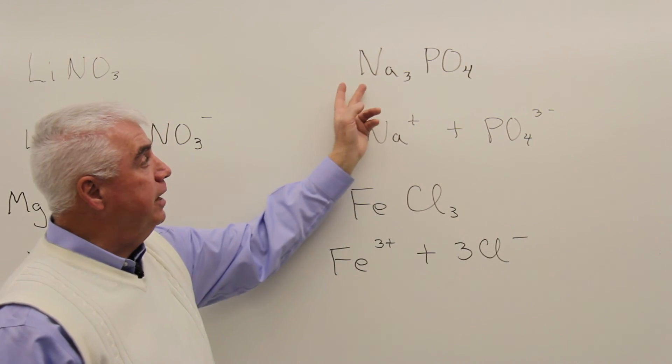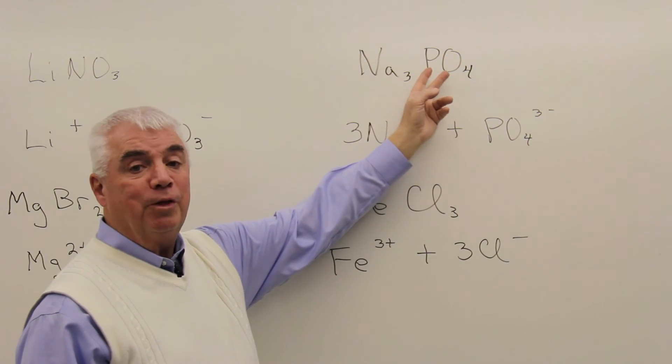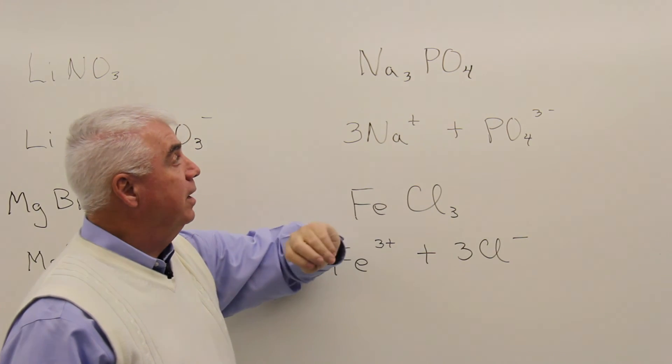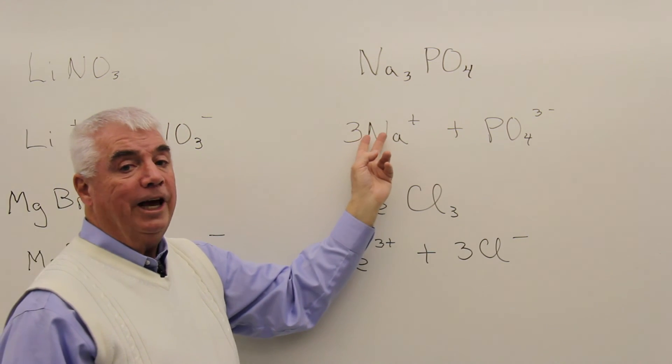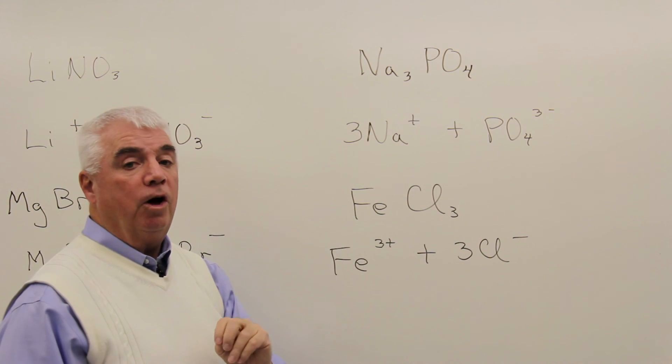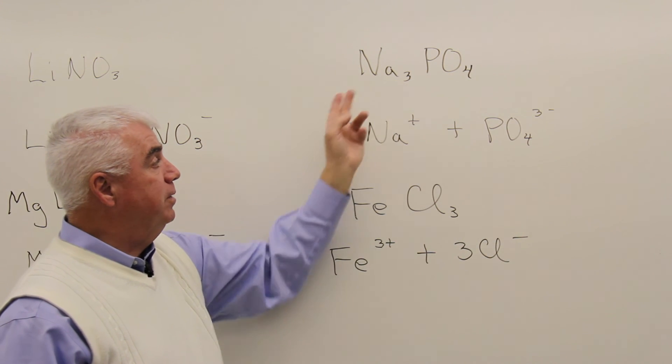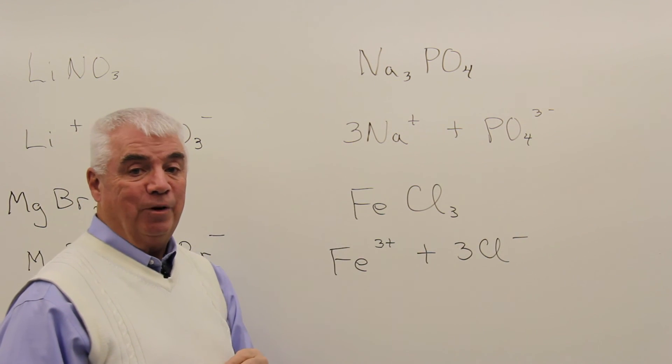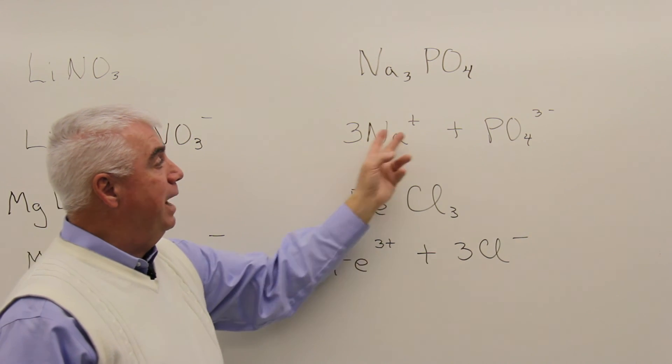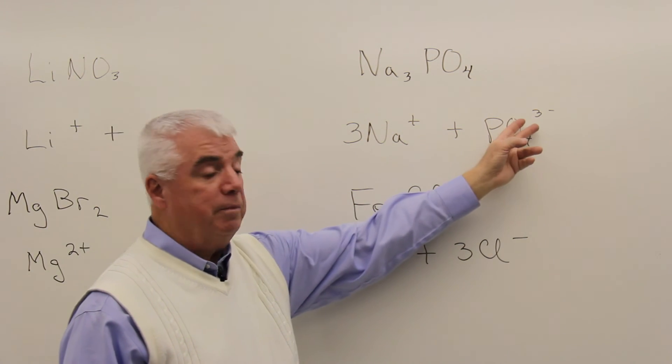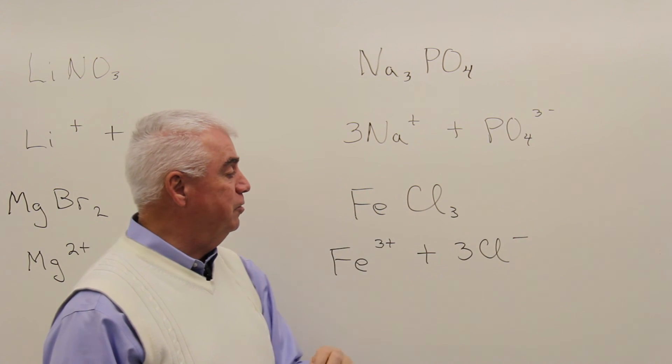With sodium phosphate, we have a metal in combination with a polyatomic ion. Sodium is in group 1A, likes to form a plus 1. The subscript now becomes the coefficient. We'd have three sodium ions, and balancing that 3 plus would be a 3 minus on the phosphate.